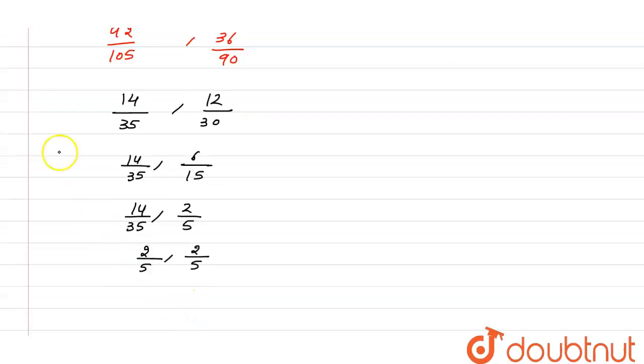So these are equal. Since yes, 42 divided by 105 is equal to 36 divided by 90. They're equivalent.